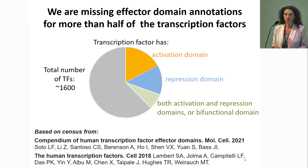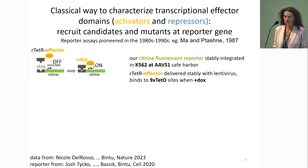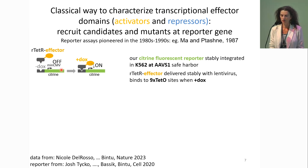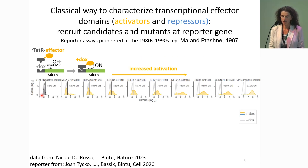We are interested in figuring out whether these transcription factors have activation or repressor domains and what their sequences are. A classical assay to characterize transcription factor domains is to recruit candidate effector domains to reporter genes. This assay was pioneered in the 1980s and simply consists of fusing a candidate activator or repressor to a DNA binding protein, which you recruit to a promoter driving expression of a fluorescent protein. You start with cells having no fluorescence, and as you recruit different activator domains, you can get higher and higher levels of fluorescence — in this case, citrine.